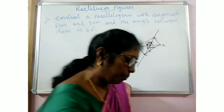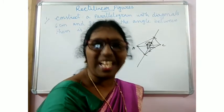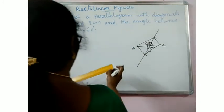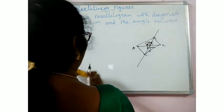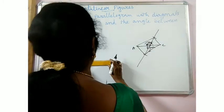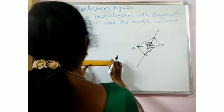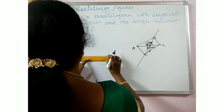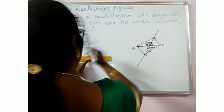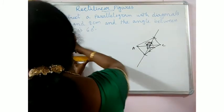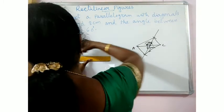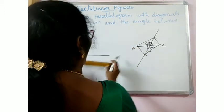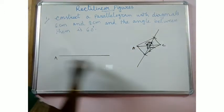Now let me do it. I cannot do it exactly, but let me try my level best to explain it. Let me draw one diagonal — the 8cm diagonal.